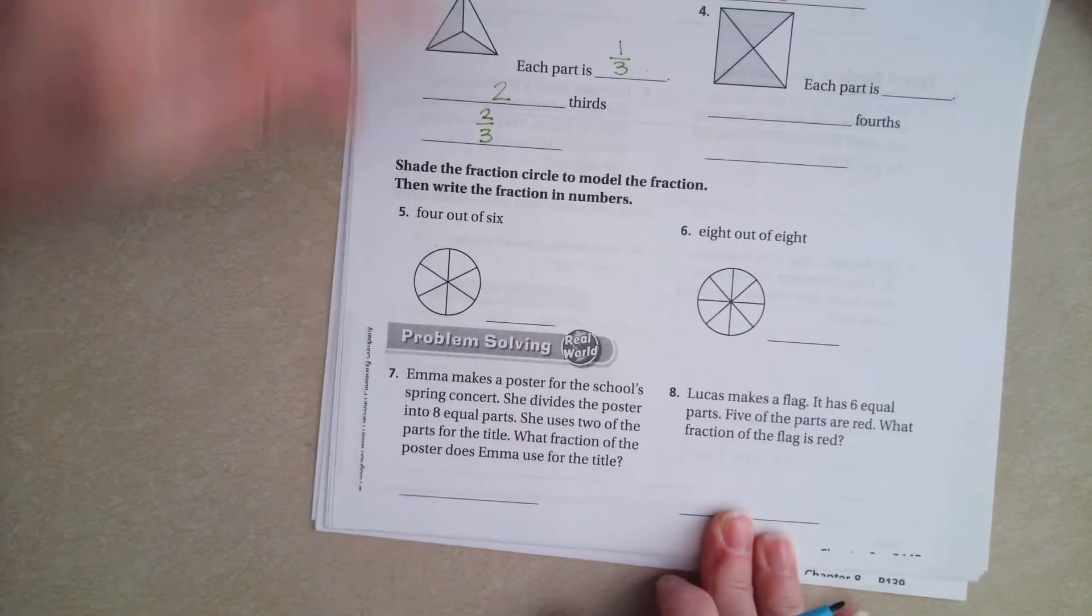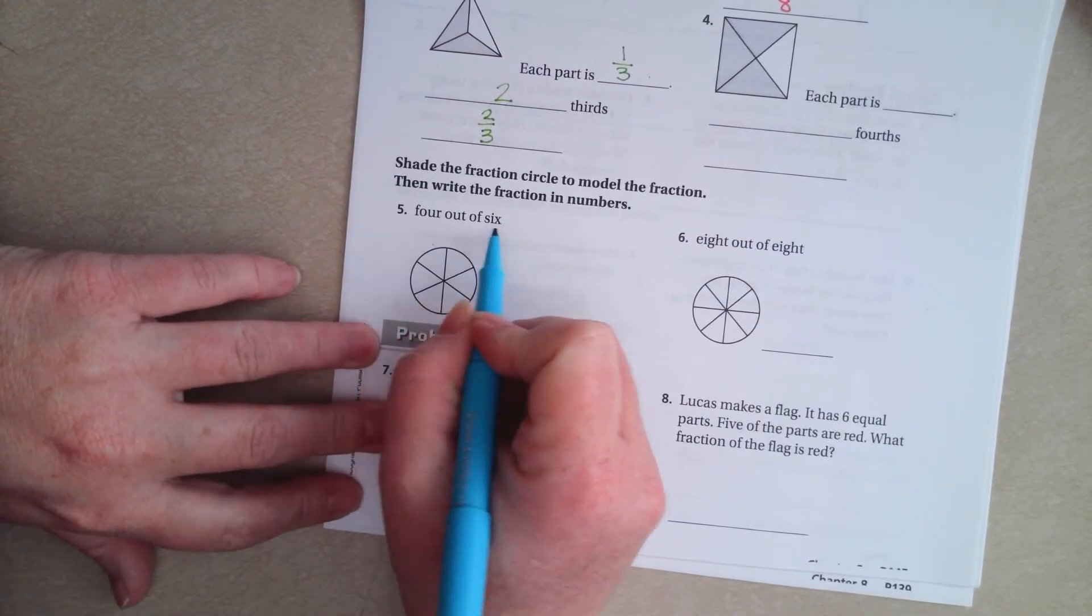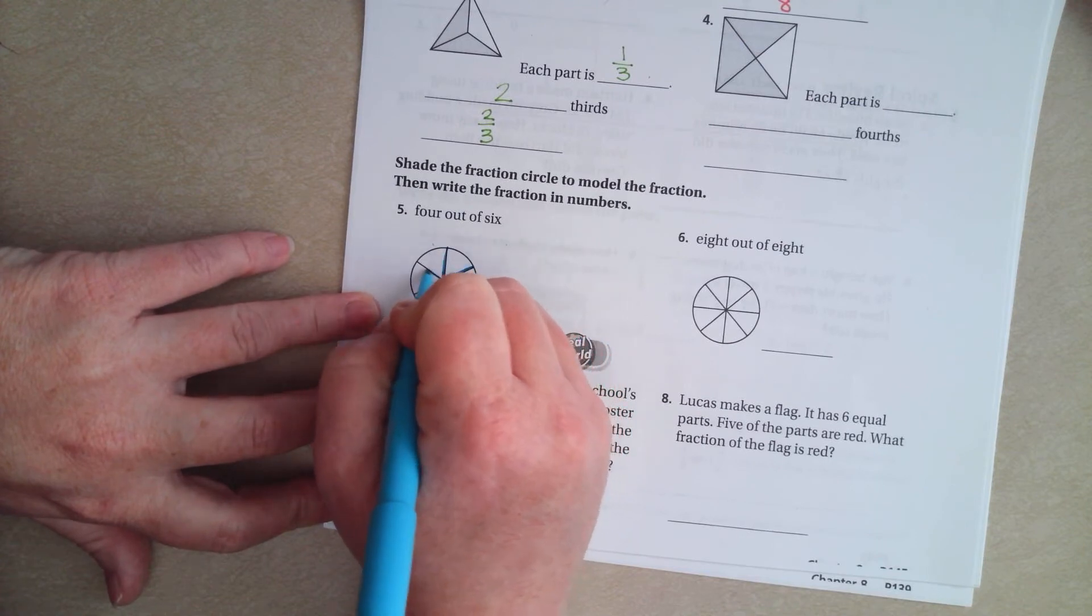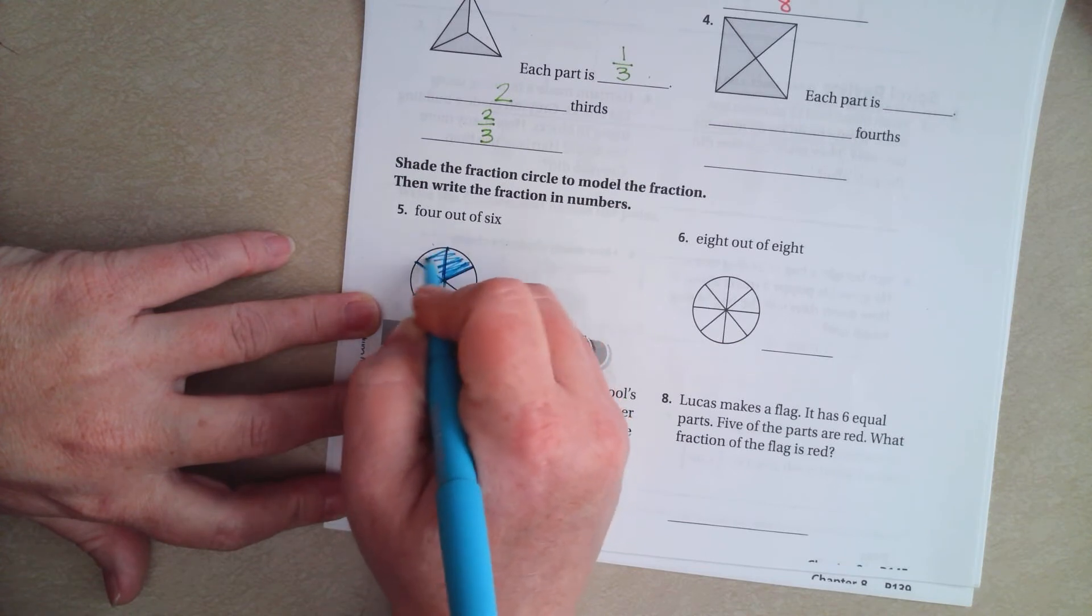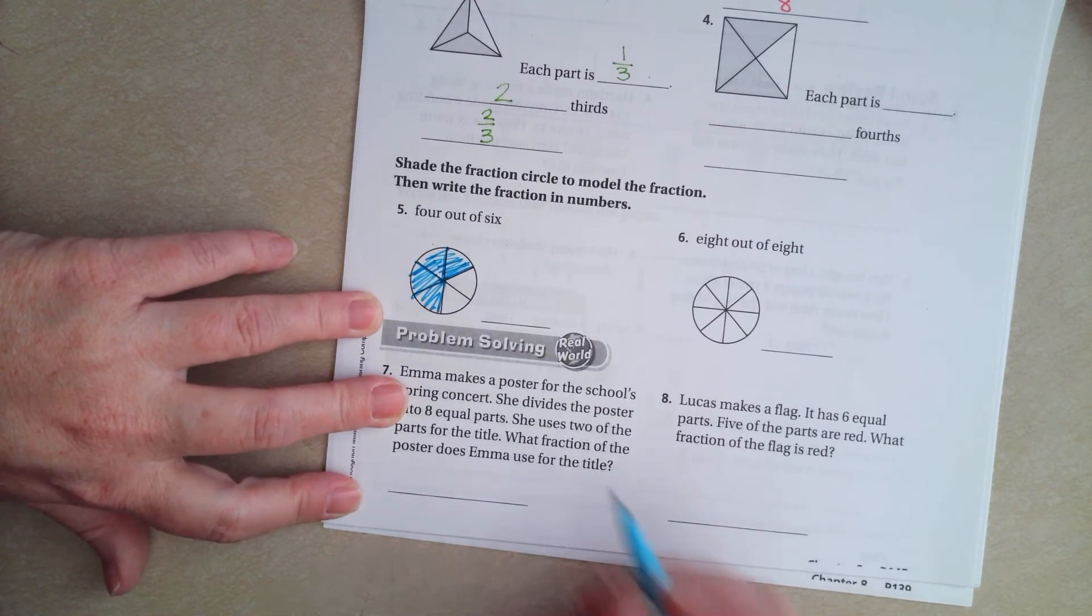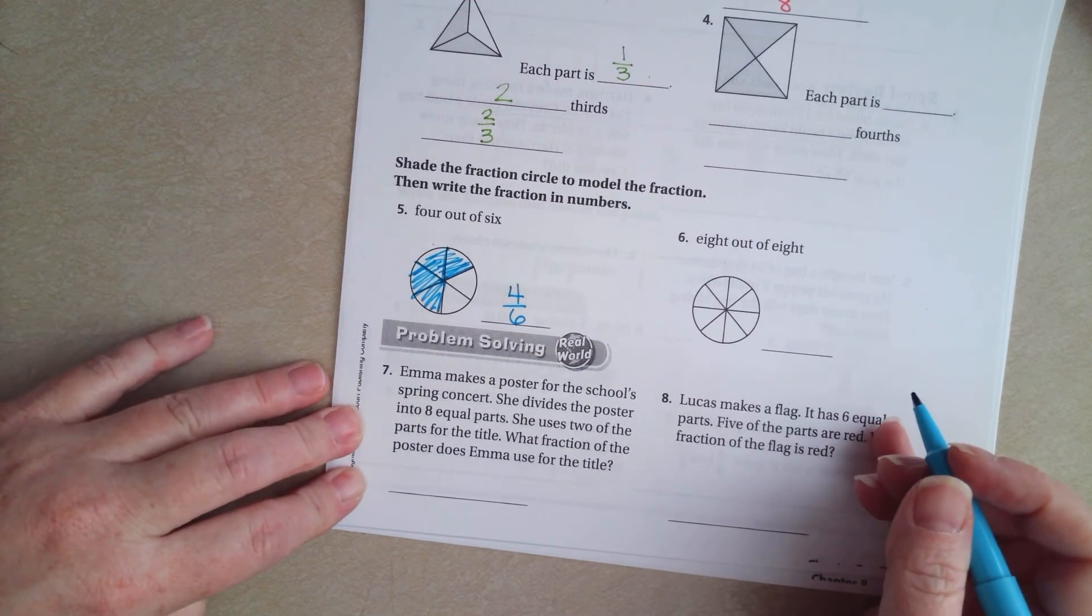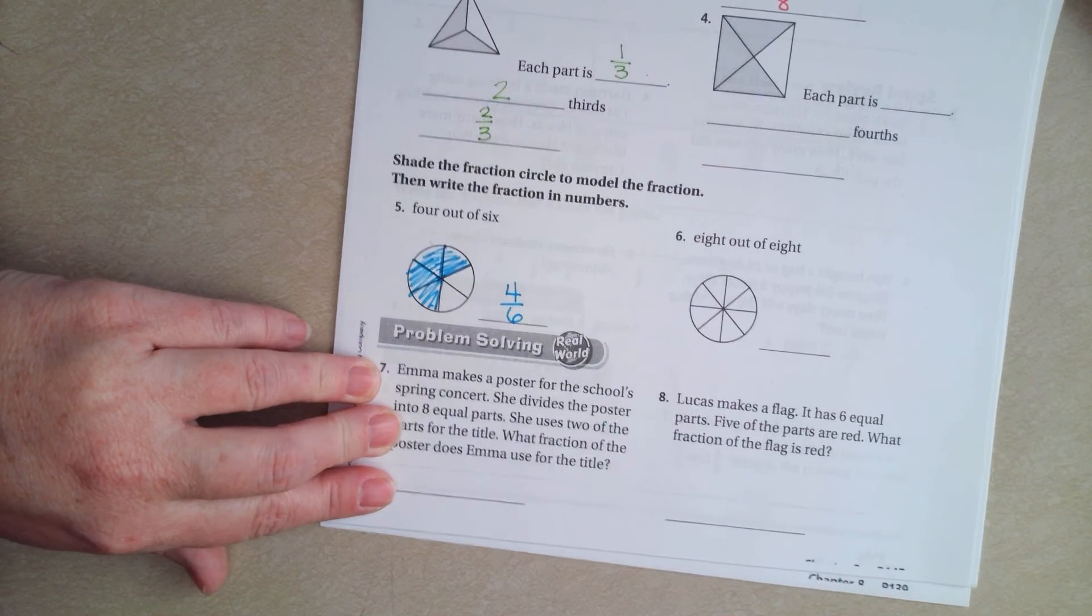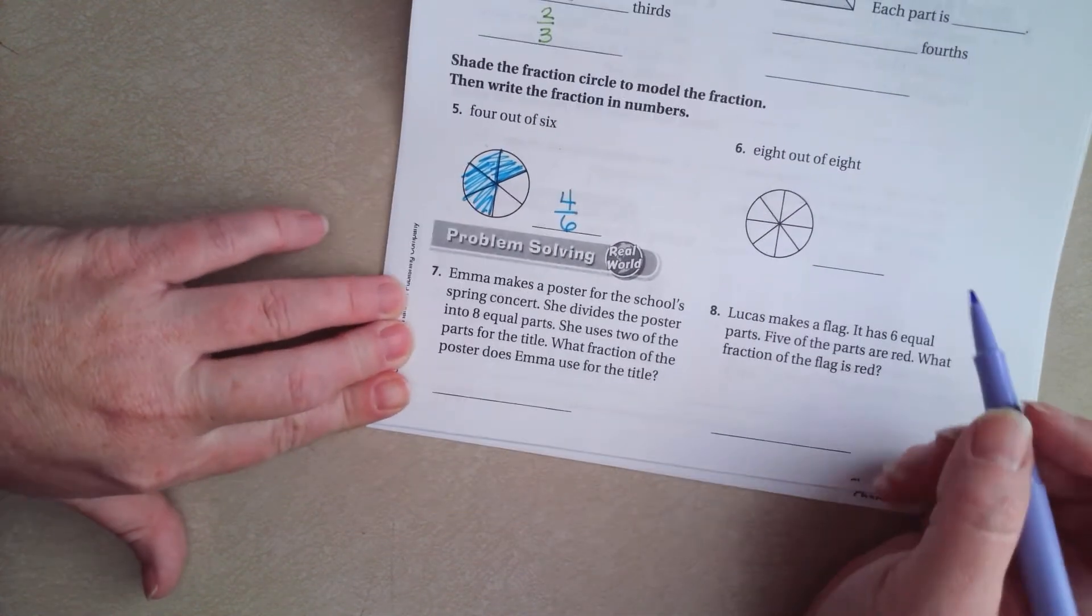We're going to go down, and we're going to shade the fraction to model what it says. So, 4 out of 6. So, we're going to color in 4 of these guys. 1, 2, 3, 4. So, I'm going to color in, quickly, not very carefully, 4 out of those 6. I colored in 4 out of the 6. 8 out of 8, you guys can color that one in. I'm pretty sure you can get it, no problem.